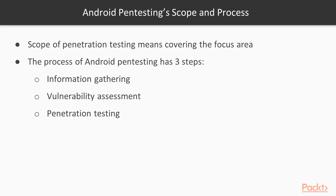First of all, information gathering. Information gathering about an Android machine is basically gathering information about the application — what kind of application it is and how it works. We need to understand this before performing penetration testing. This is called footprinting or information gathering, which is step one.